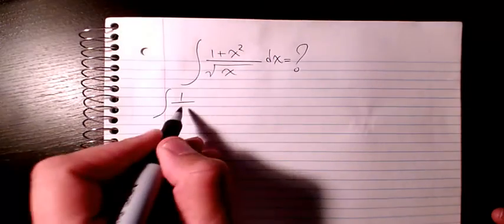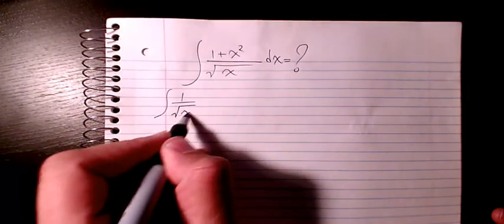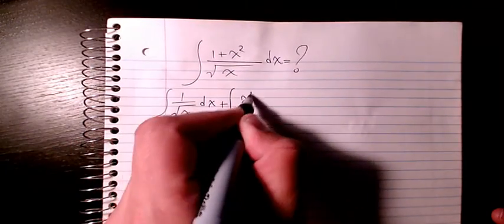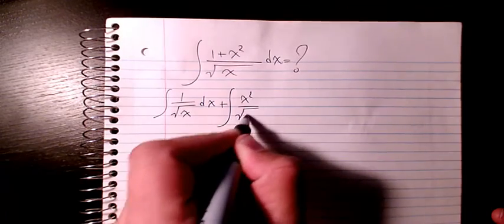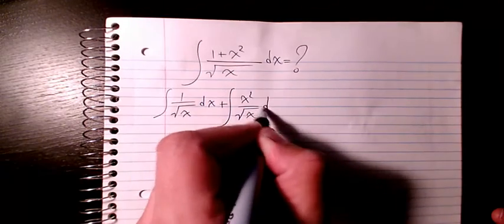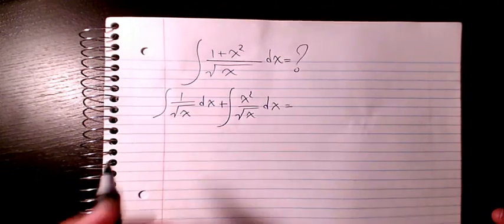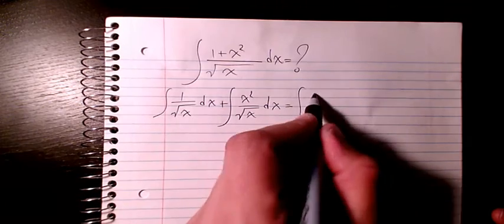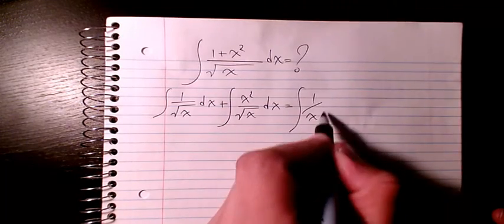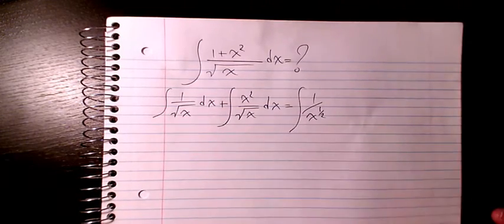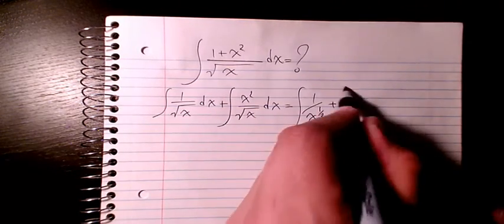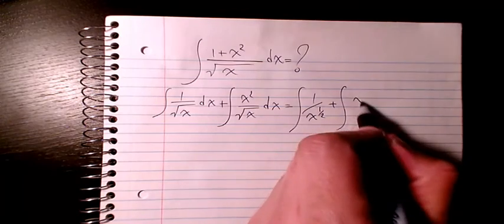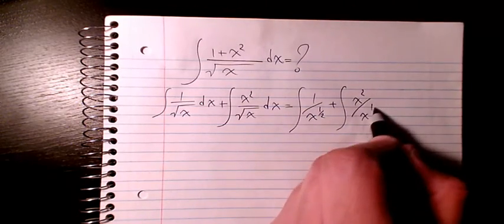I'm going to separate them into 1 over square root of x dx plus x² divided by square root of x dx, which is 1 over x to the power of 1/2 plus x² divided by x to the power of 1/2.